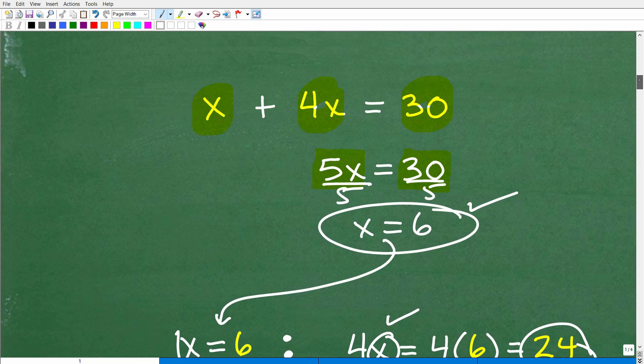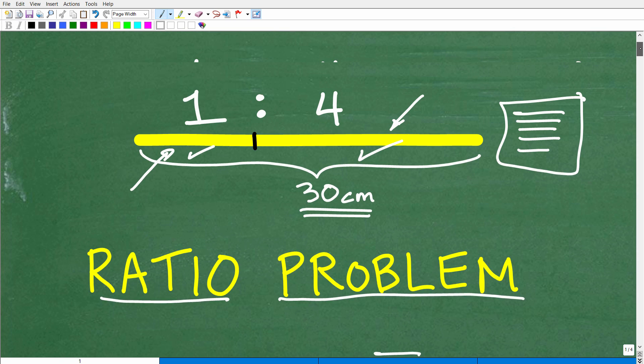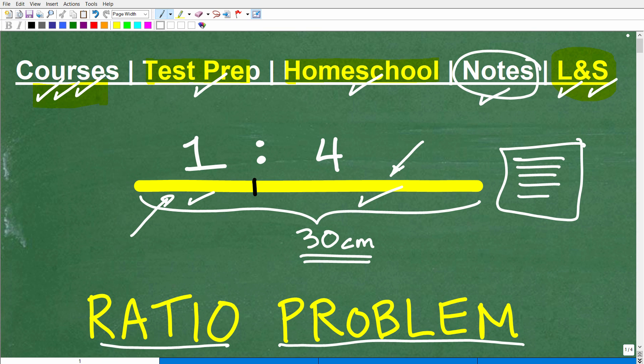Okay, so this is a common type of problem that you're going to see at the middle school, especially at the high school level. Don't let these problems scare you. The way to learn how to tackle any problem in mathematics is to, one, first learn the skills that are required to solve that problem. In this particular problem, you have to understand what is a ratio. You have to know some basic algebra. And then you have to apply those skills.